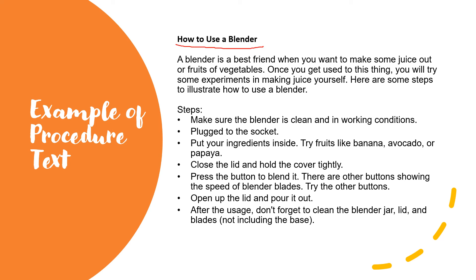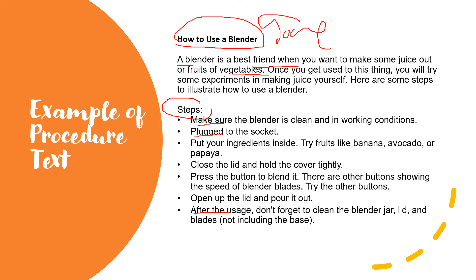This is an example of procedure text: 'How to use a blender.' This is the goal or the title. A blender is a best friend when you want to make some juice out of fruits and vegetables. These are the steps: the first step, second step, until the last step. This is the example of procedure text.